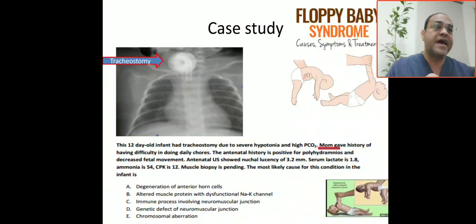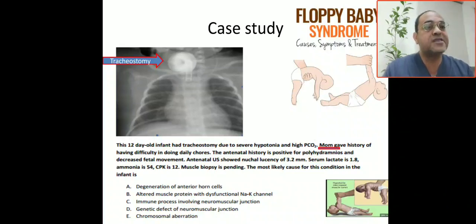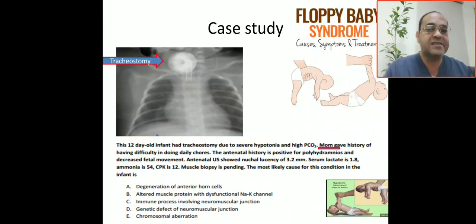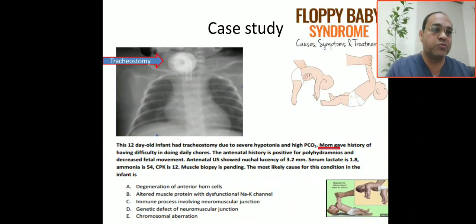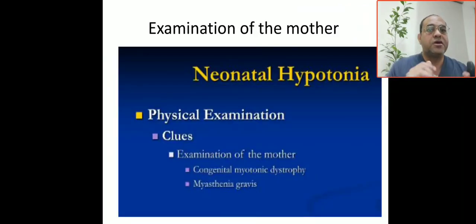Option B — alteration of muscle protein with dysfunction of the sodium-potassium channel — represents myotonia dystrophica. This is most probably the cause. Myasthenia gravis is excluded by age, as it presents immediately after birth. Option C — immune process at the neuromuscular junction — is myasthenia gravis, excluded by age. So our answer is myotonia dystrophica, because the mother is affected and myasthenia gravis is excluded by age.